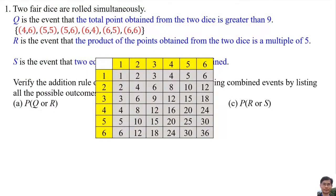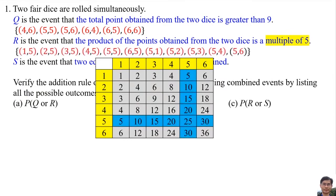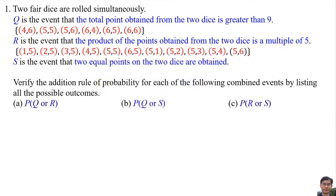For event R — product is a multiple of 5 — all the possible outcomes are: (1,5), (2,5), (3,5), (4,5), (5,1), (5,2), (5,3), (5,4), (5,5), (5,6), and (6,5).